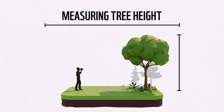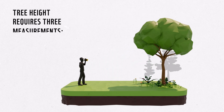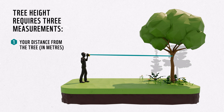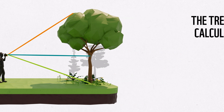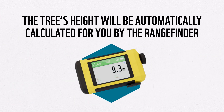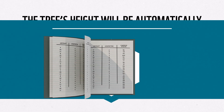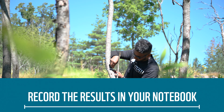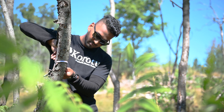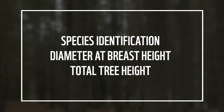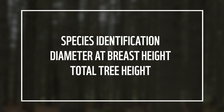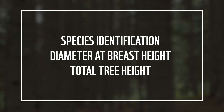Next, record the total height of the tree using a laser rangefinder. To do this, first make sure you stand far enough away from the tree so that you can see both the bottom and top of the tree through the laser rangefinder. Measure the distance in meters and record that in your notebook. Measure the angles while looking at the top and bottom of the tree. The tree height will then be automatically calculated for you by the laser rangefinder in meters. Record the tree height in meters in your notebook. Repeat this for all trees greater than 2 meters in height within the plot. Now that you have the species identification, diameter at breast height, and total height for each tree in the plot, you can calculate the carbon stored in these trees.